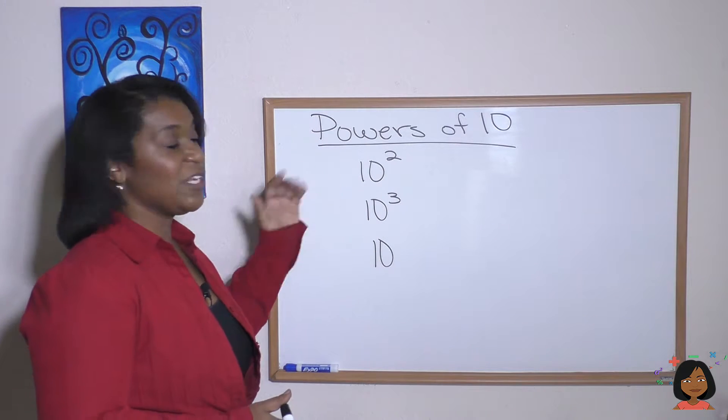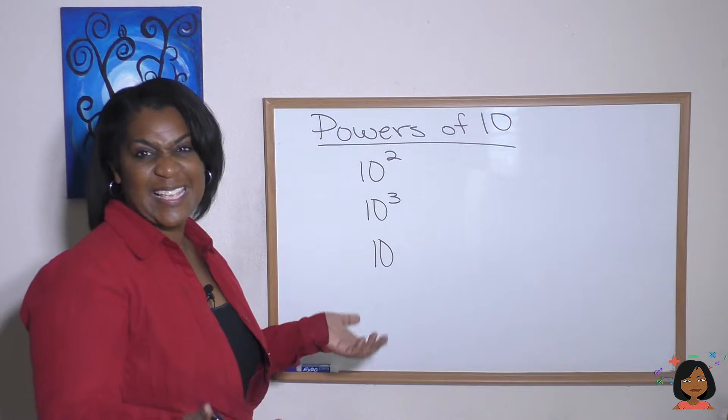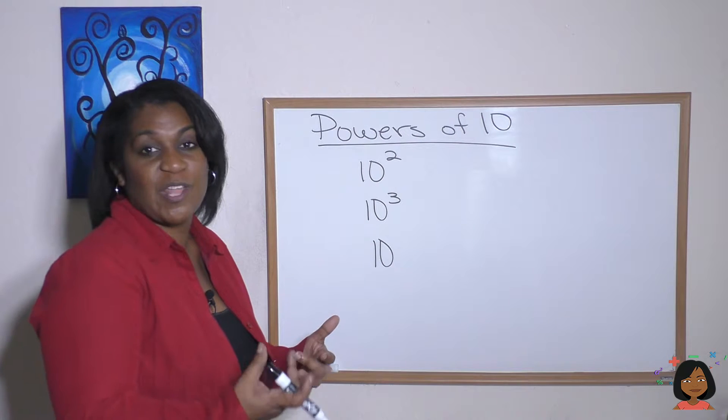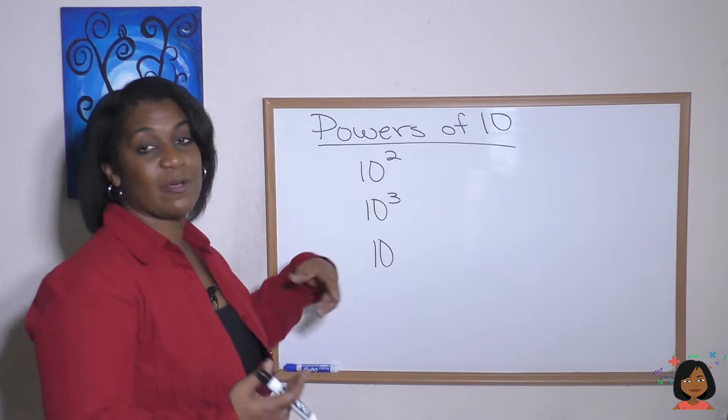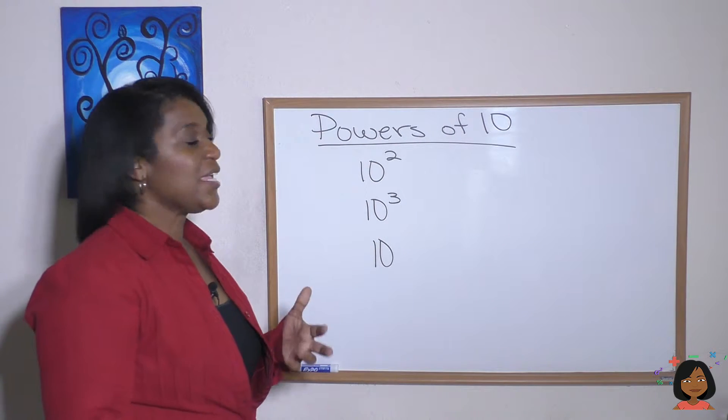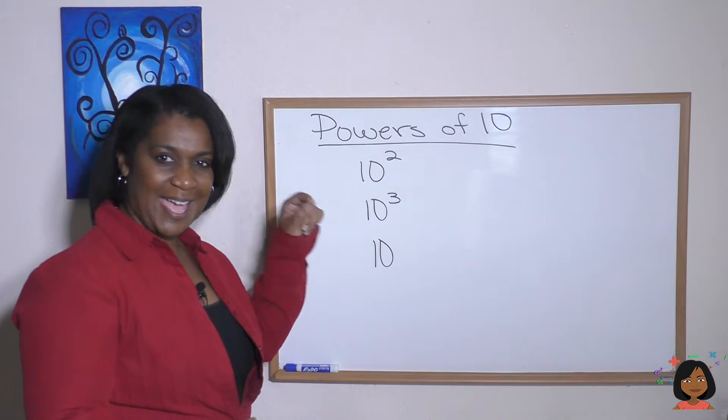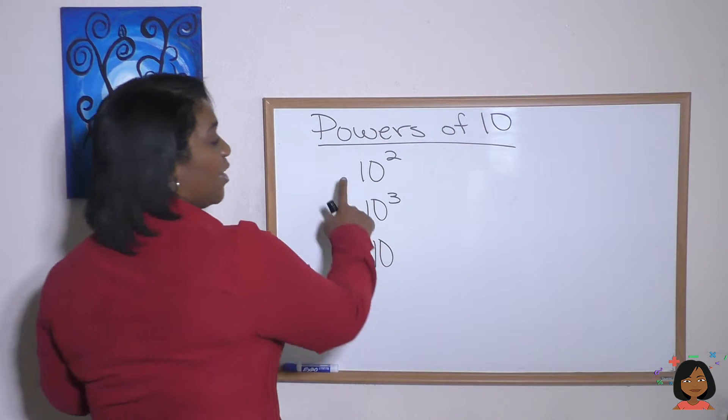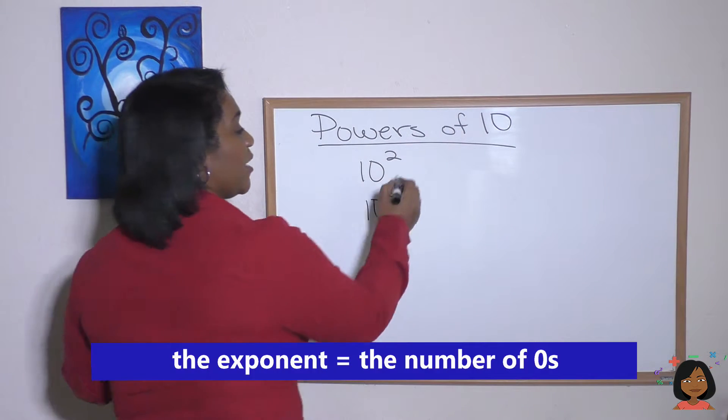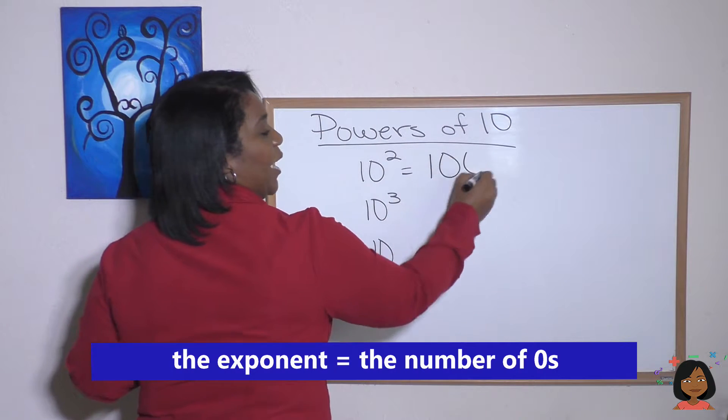So powers of 10, we know that 10 squared, the easy part when we have 10 squared is we know that the number of zeros in our actual number is the number in the exponent, which means our number is going to have two zeros in it. We put a one, we have two zeros.